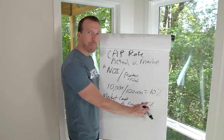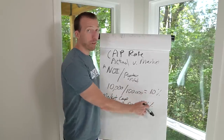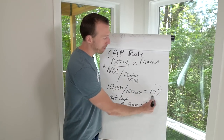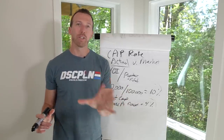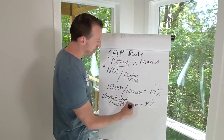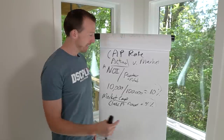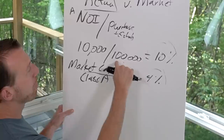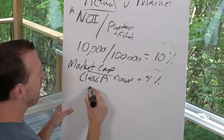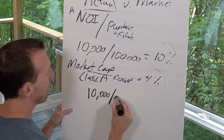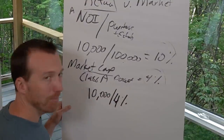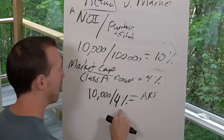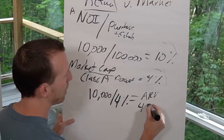Why is a 4 cap better than a 10 cap? I would think 10% is better than 4%. Here's what you want to do: you want to buy at a 10 cap if you can, and sell at a market cap rate of 4. To find out what a property is worth using the market cap rate, you take your net operating income and divide it by 4%. So $10,000 divided by 4% means that your property is worth $250,000.